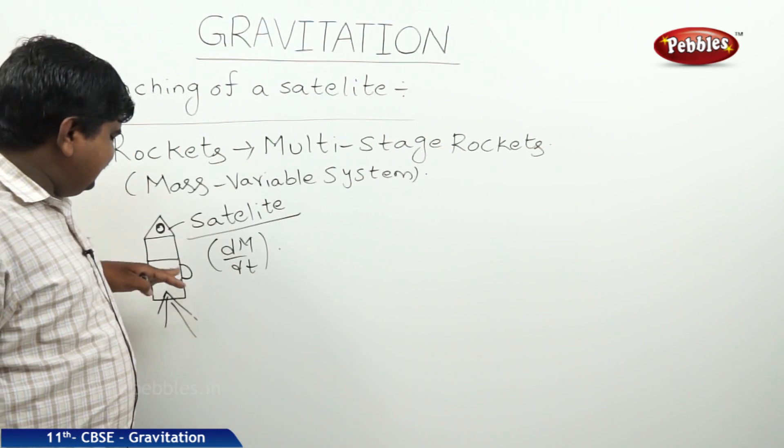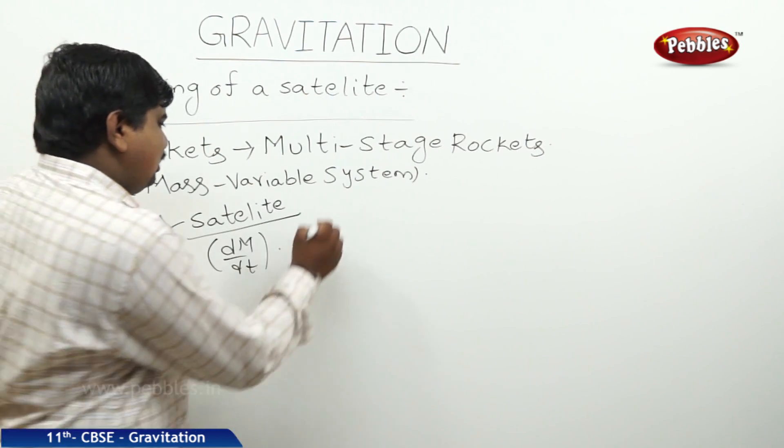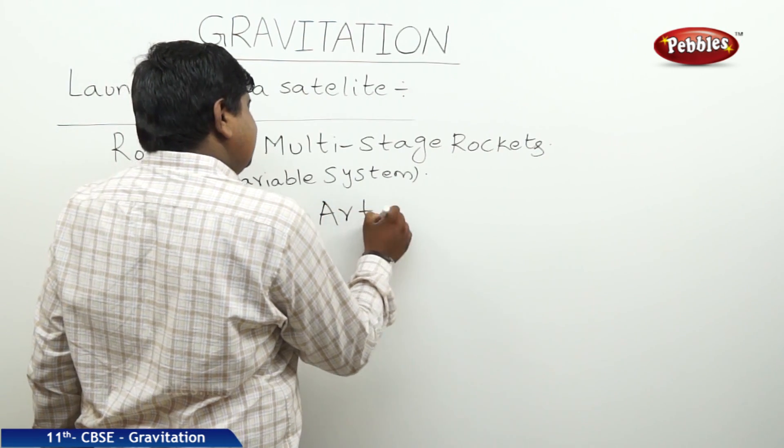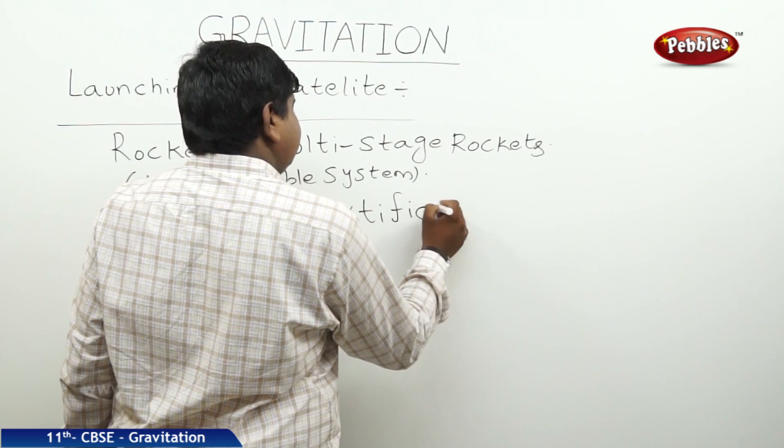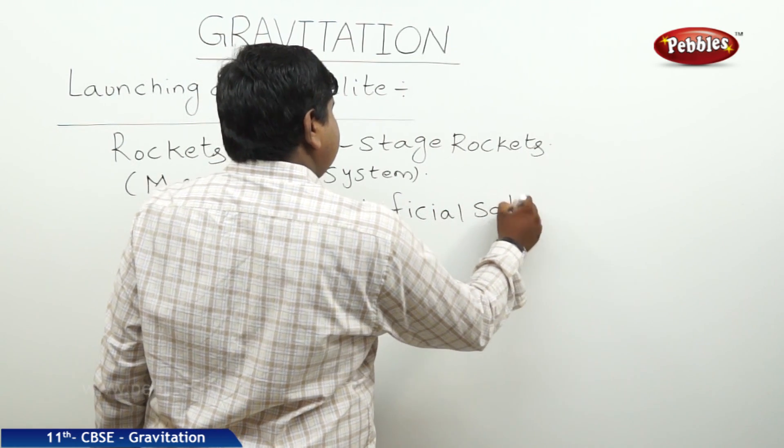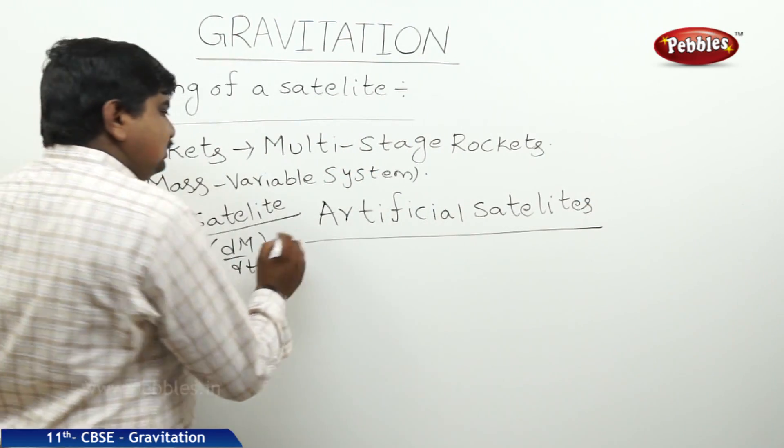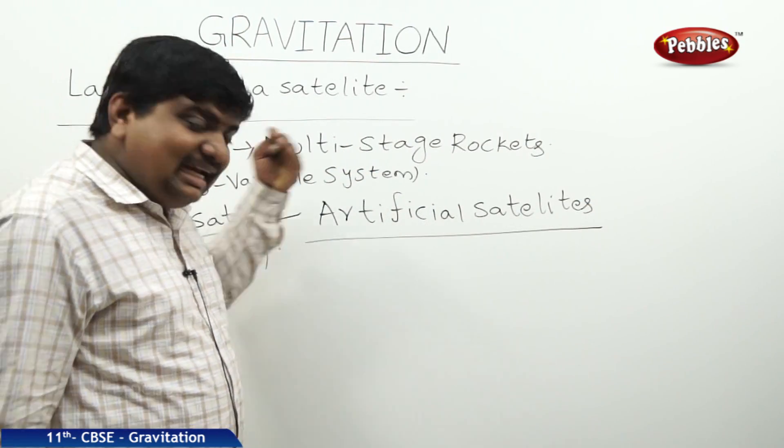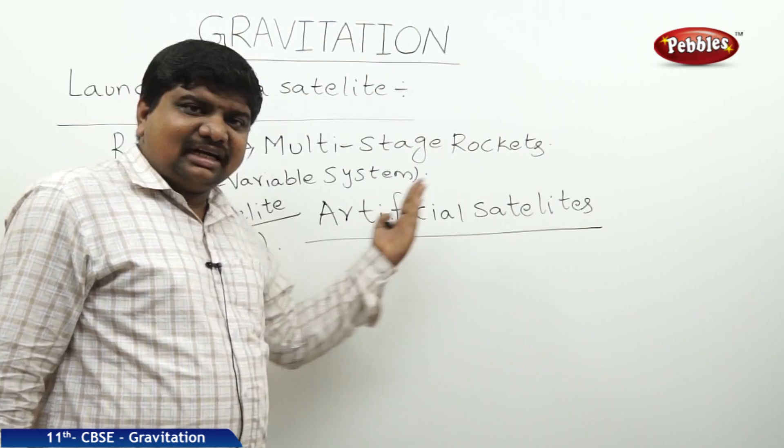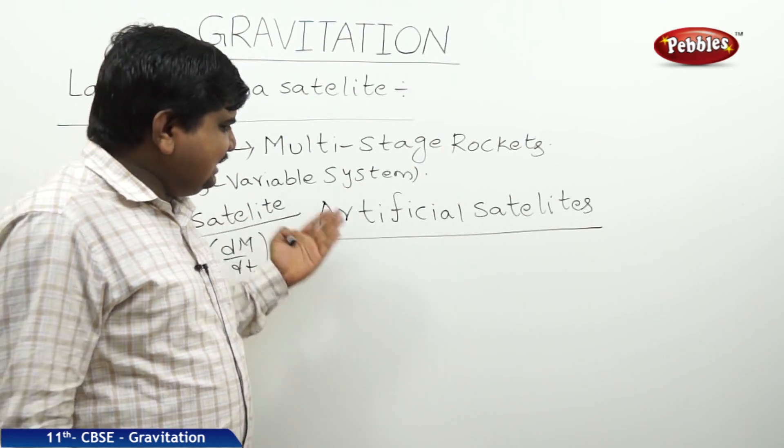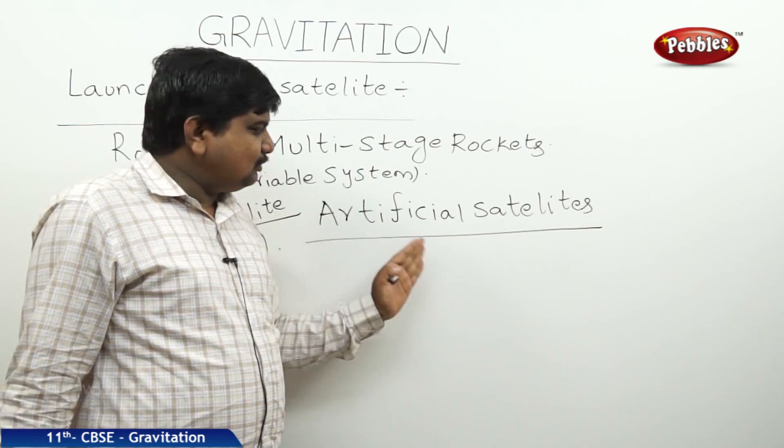The satellites which are launched by these type of multi-stage rockets are called artificial satellites. These artificial satellites are many types with respect to the use and coverage area.